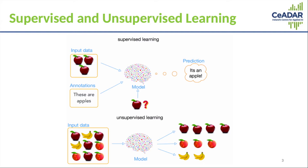Supervised learning uses labeled data. So in this case, if you were trying to classify images based on whether they contained an apple or not, you can see in the diagram here you need manual annotations telling you which images are apples. The other kind is unsupervised learning, where your data is unlabeled. This could include tasks such as clustering data based on similarities.